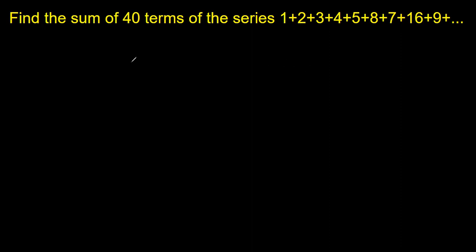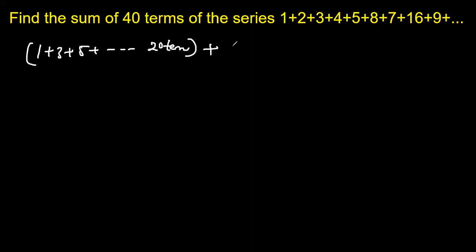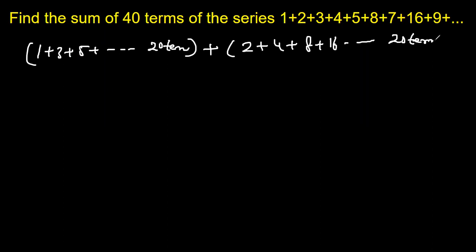So the question becomes very easy. The sum of 40 terms would be 1 plus 3 plus 5 plus up to 20 terms, and then we separate the GP: 2 plus 4 plus 8 plus 16, also 20 terms. Now we simply apply the sum of n terms formulas for each series.